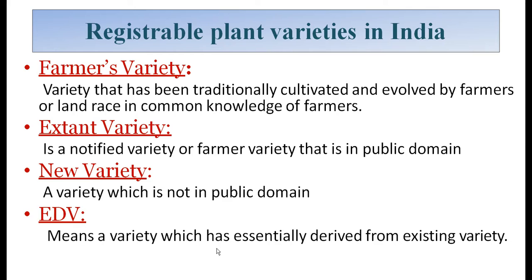These are the registrable plant varieties in India. Farmers' varieties means varieties that have been traditionally cultivated and evolved by farmers, or landraces in common knowledge of farmers. Extant varieties are notified varieties or farmer varieties that are in the public domain, commonly used by all farmers. New varieties are those not yet in the public domain — they are in the pipeline of research, multiplication, and trials. Essentially derived varieties means varieties which are essentially derived from existing varieties.